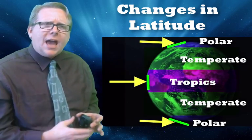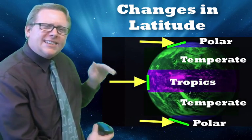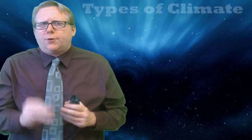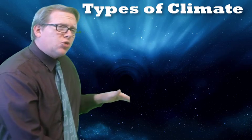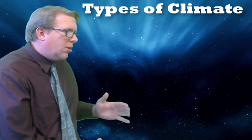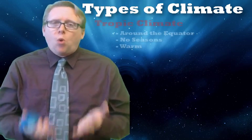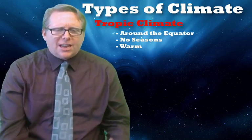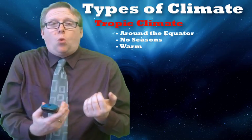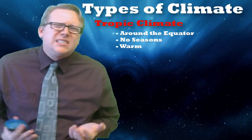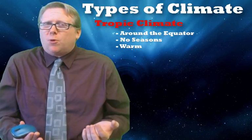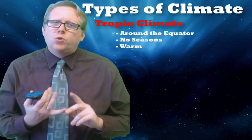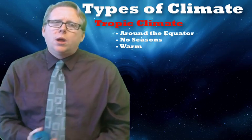Our three categories are tropical, polar, and temperate. In the tropics, the sunlight is always perpendicular so it's really hot — you can have tropical jungles, tropical deserts, areas that are always warm. There really are no seasons; in the Amazon rainforest, for instance, there isn't really a winter. It's always pretty much the same.